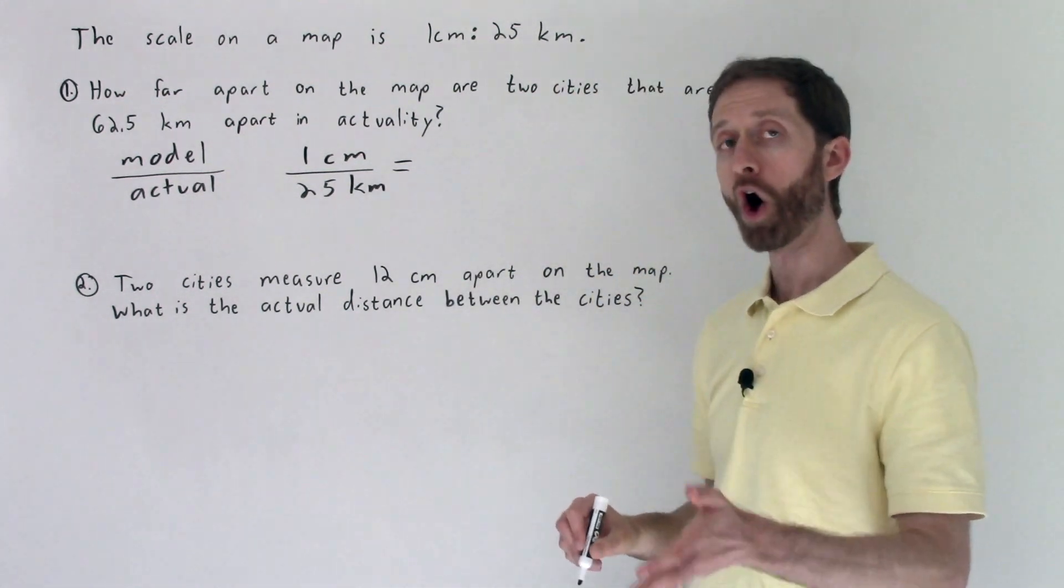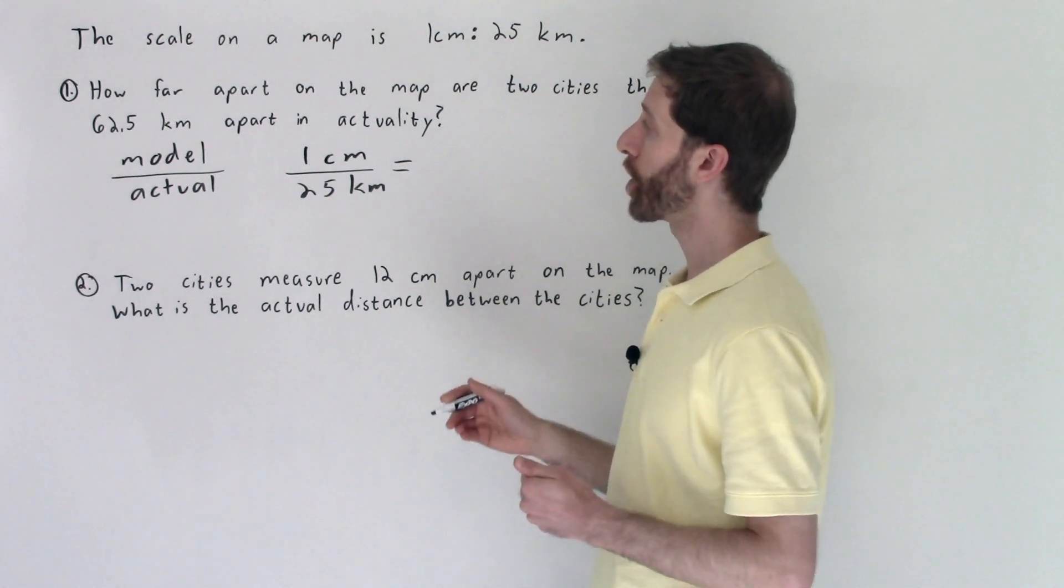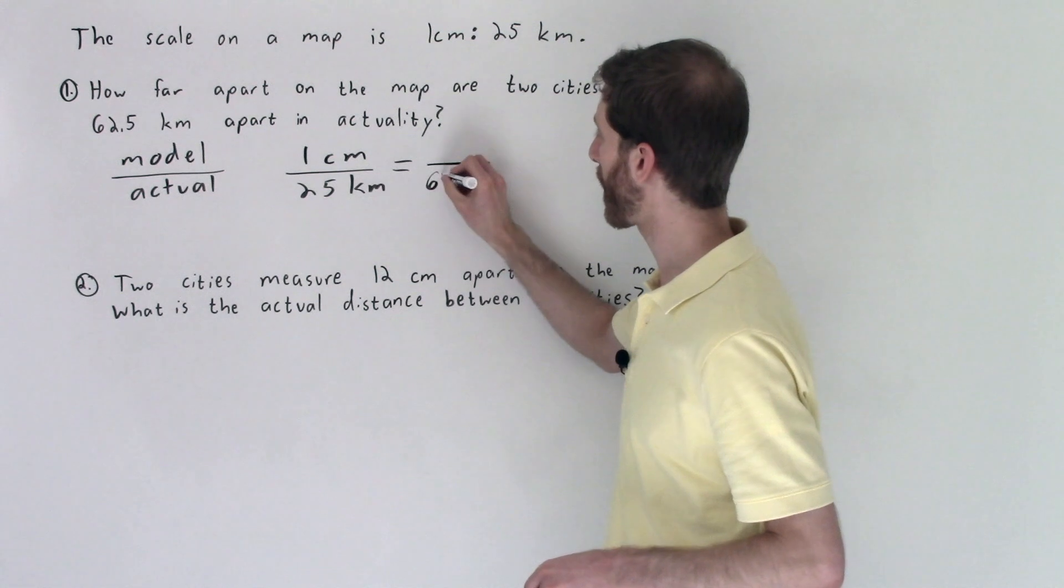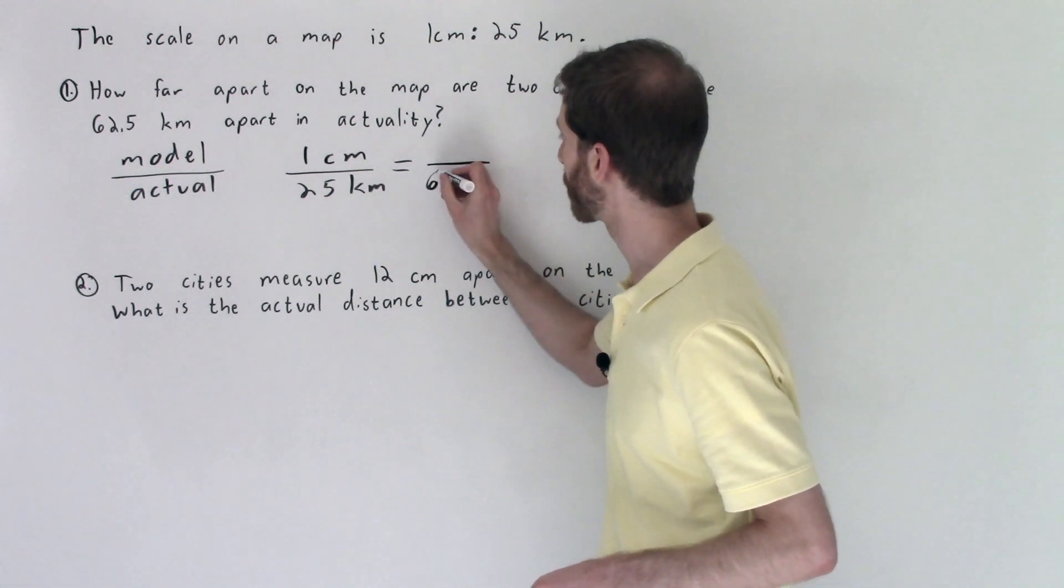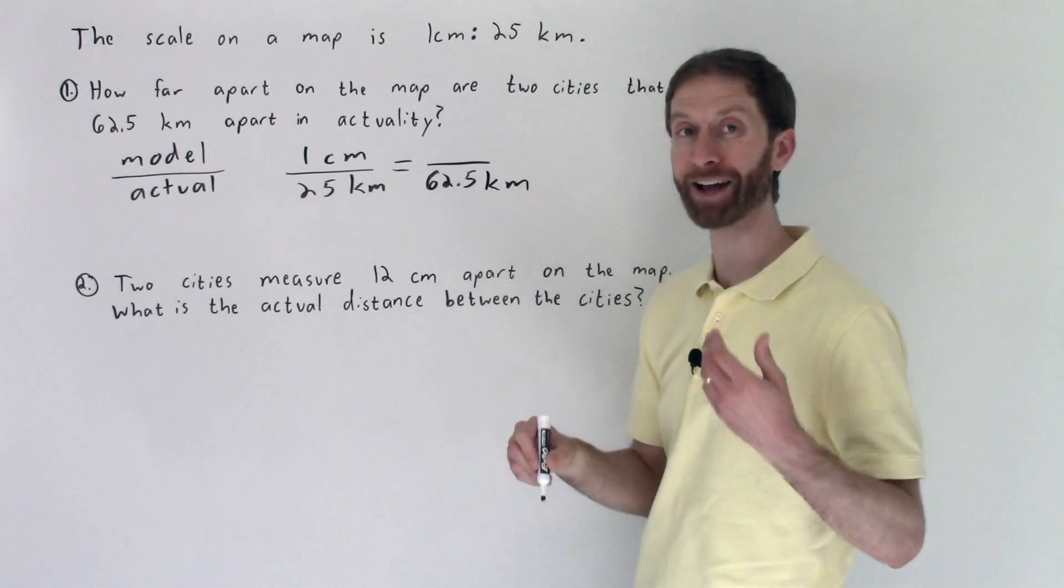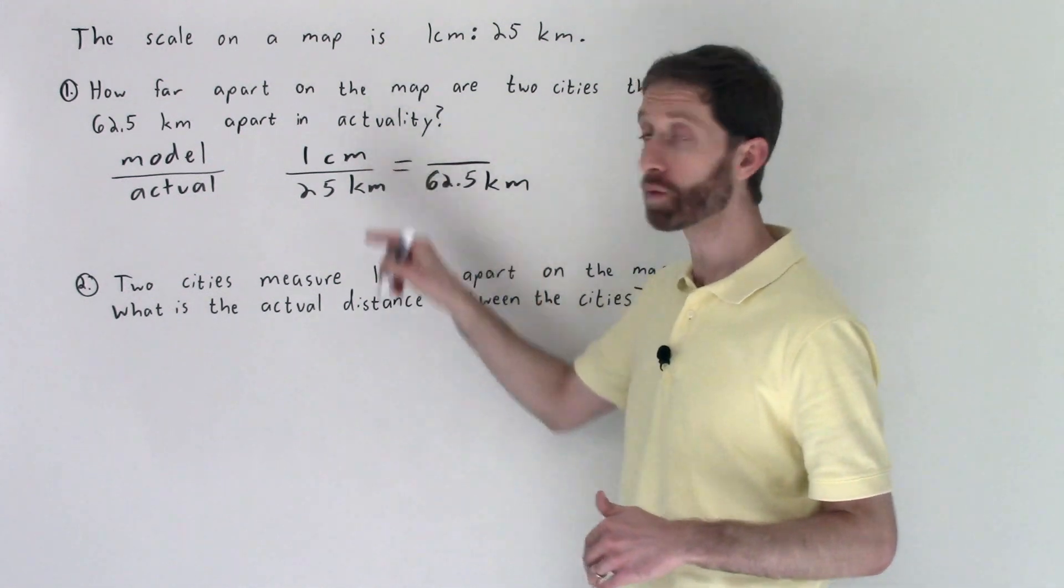So that ratio needs to be equal on the other side of this proportion that we're forming because we know that we have the actual of 62.5 kilometers. So that's 62.5 kilometers, that the actual amount is on the other side. So the rate on the right hand side will be equal to the rate on the left hand side.